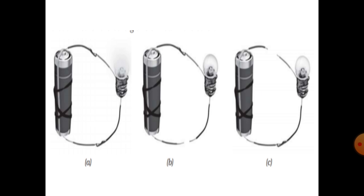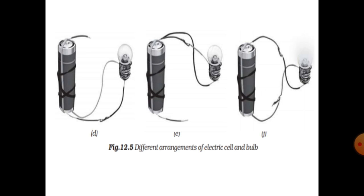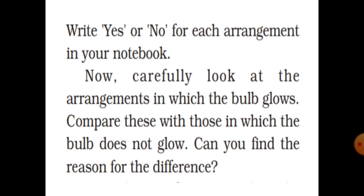Connect the wires fixed to the bulb with those attached to the cell in six different ways as shown in the figure. For each arrangement, find out whether the bulb glows or not. When both terminals are connected properly the bulb glows; when only one side is connected, it does not glow. Write yes or no for each arrangement in your notebook.